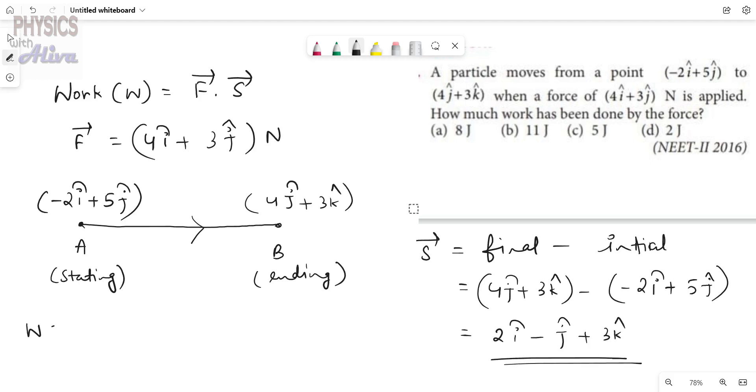From here we can calculate work done, that is force dot displacement. From dot product we know the formula. Suppose a vector is given, a x i cap plus a y j cap plus a z k cap, and b vector is given, b x i cap plus b y j cap plus b z k cap. Then a dot b equals a x b x plus a y b y plus a z b z.